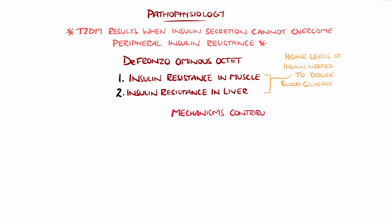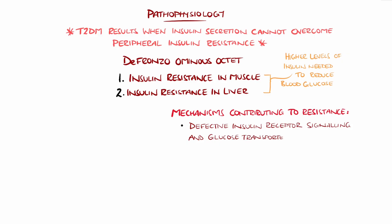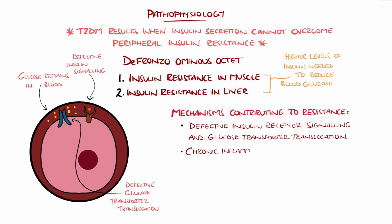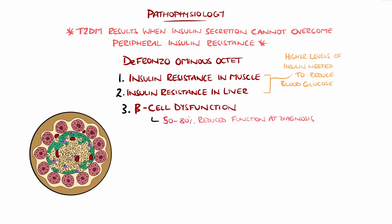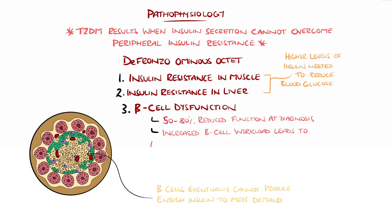There are multiple mechanisms leading to insulin resistance, including defective insulin receptor signaling and defects in glucose transporter translocation. Contributing mechanisms include chronic inflammation, elevated free fatty acids, and mitochondrial dysfunction, which interfere with insulin receptor substrate activity. The other large contributor to type 2 diabetes is beta cell dysfunction. At diagnosis, beta cell function is already reduced by 50–80%. Over time, pancreatic beta cells fail to compensate for increased insulin demand, leading to inadequate insulin secretion. This is believed to be due to chronic insulin resistance and hyperglycemia increasing the beta cell workload, leading to functional exhaustion and apoptosis, meaning programmed cell death, of the beta cells.